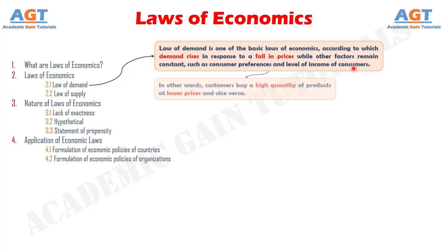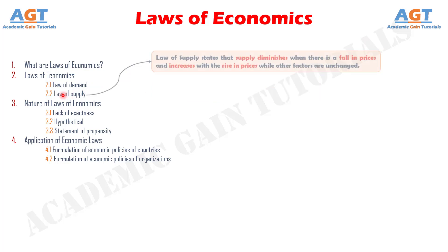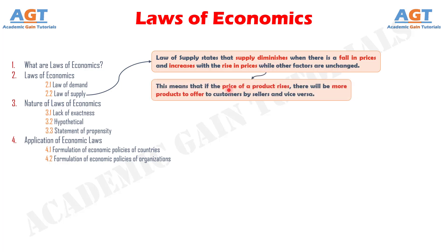In other words, customers buy a high quantity of products at lower prices and vice versa. Number two, law of supply. The law of supply states that supply diminishes when there is a fall in prices and increases with the rise in prices while other factors are unchanged. This means that if the price of a product rises, there will be more products to offer to customers by sellers and vice versa.